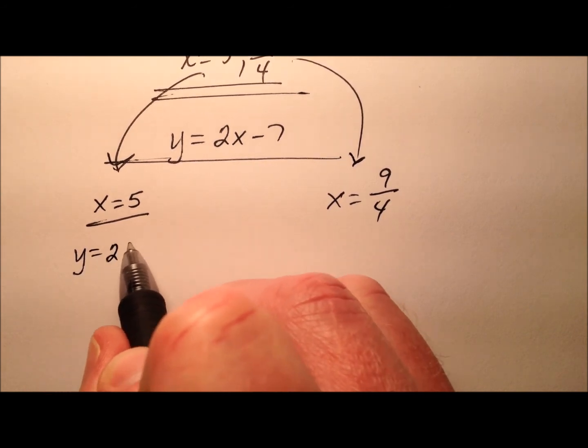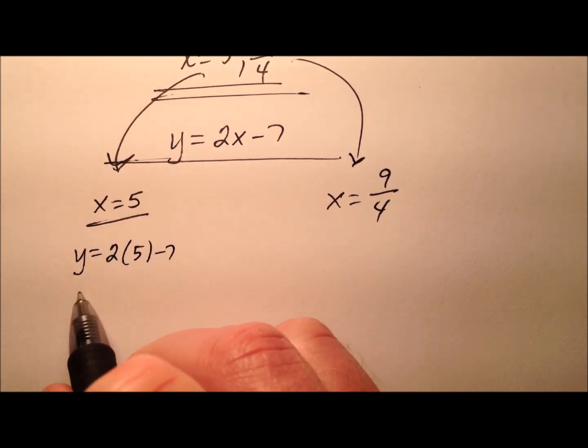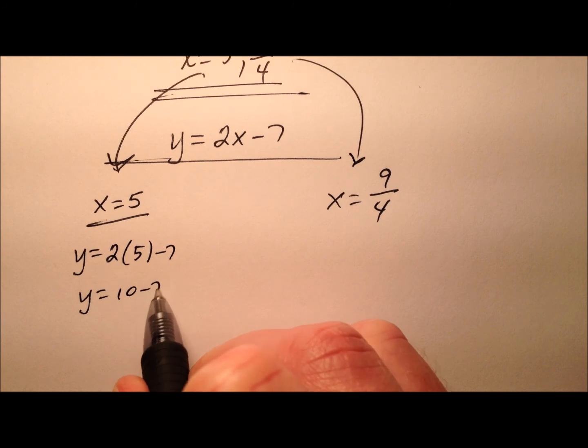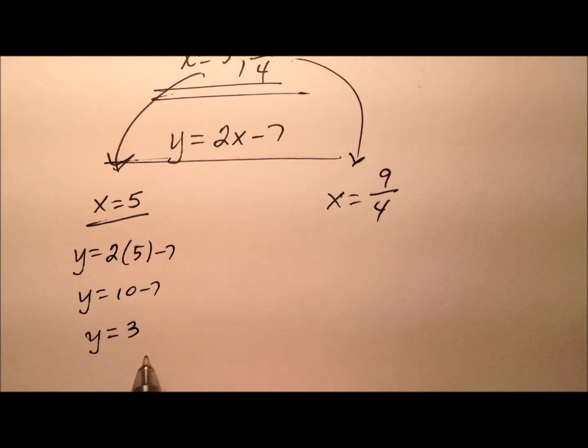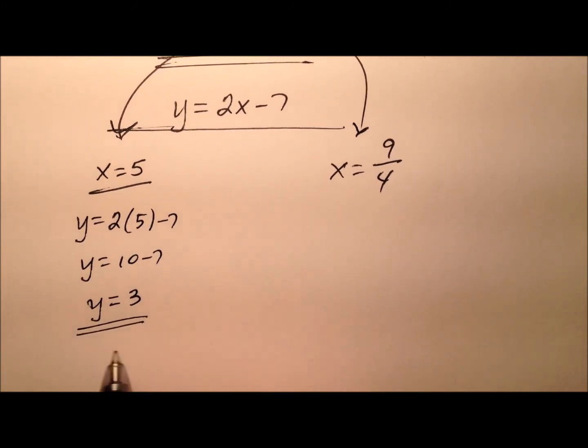So 2x minus 7 is 10 minus 7 is 3. So that ordered pair looks like 5, 3 for that first solution.